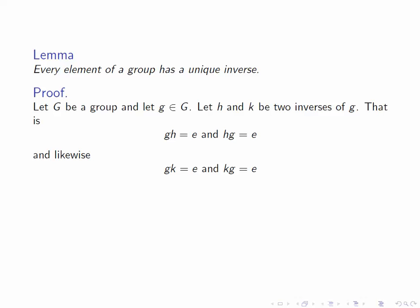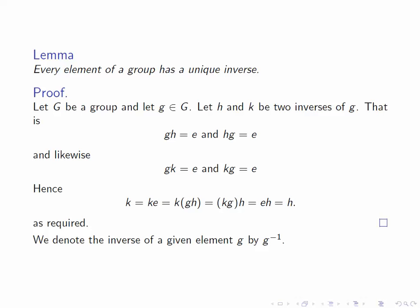Now doing some simple manipulation with this tells us that K is equal to K times E. E is equal to GH, so that's equal to K times GH. Using associativity, that's KG times H, and then by the second property here, that's E times H, which is H. So we've proved that K is equal to H as required. So the inverse of an element is unique. So we can denote the inverse of an element by G to the power minus one.